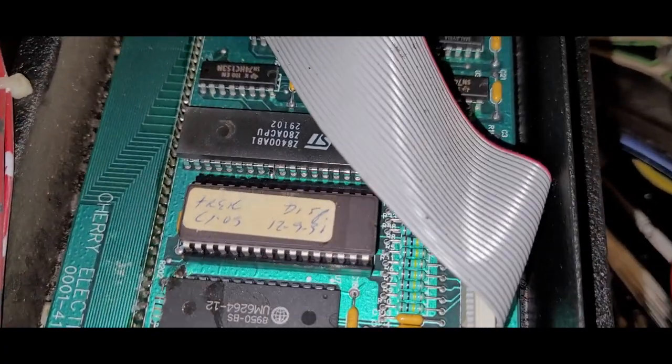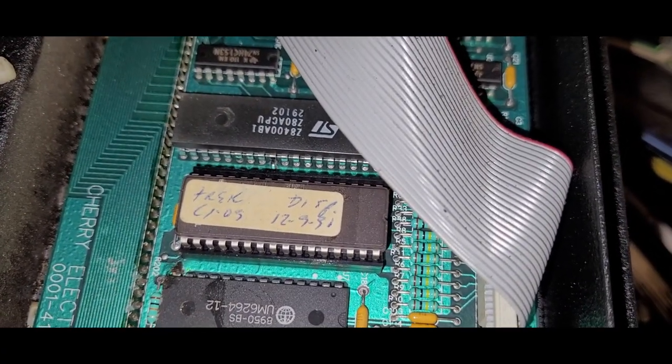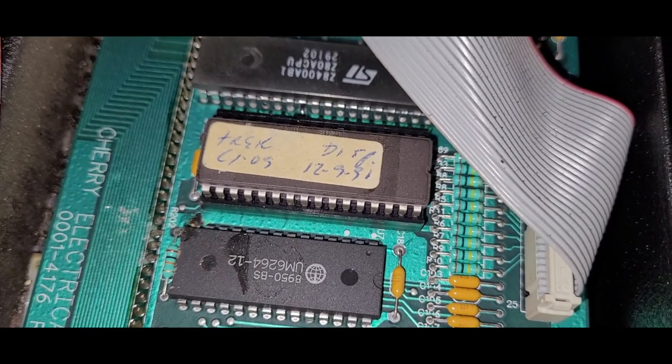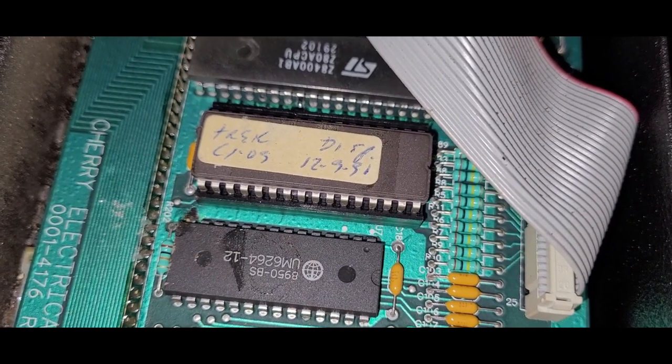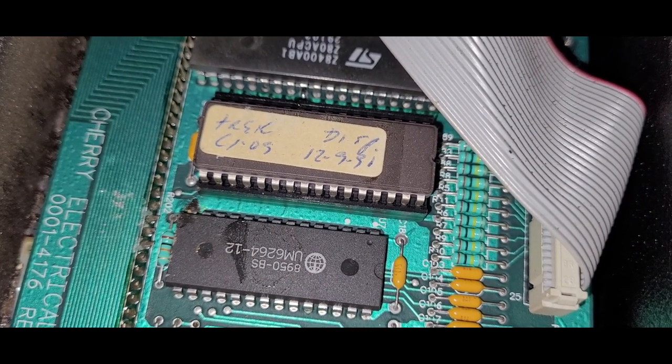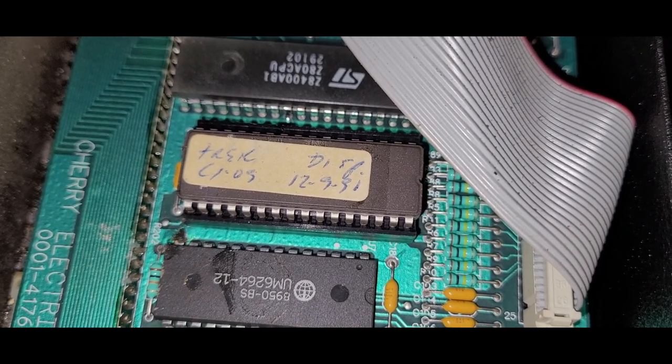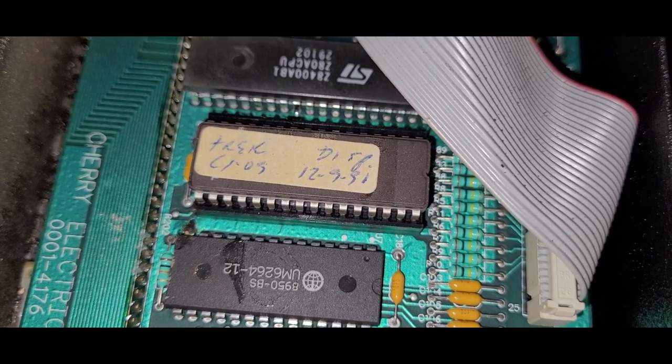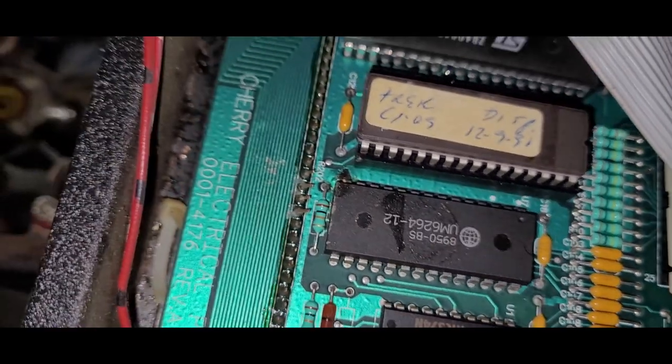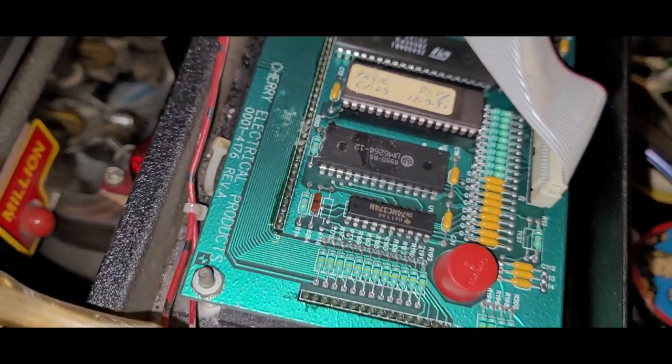Trek display CP05 12-9-91. What is that? It doesn't really tell me a whole lot does it? Doesn't say revision A or B or C, it just says Trek C 105. Alright we're gonna have to look at internet pinball database, see what revisions are out there.